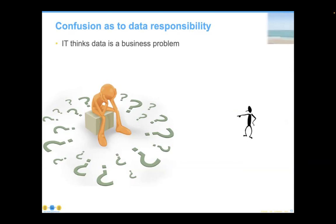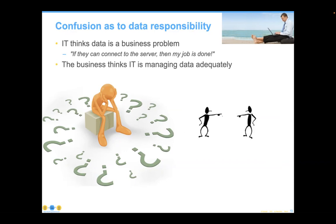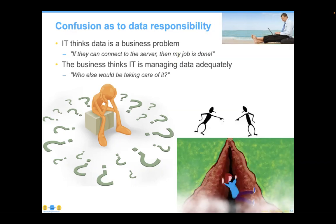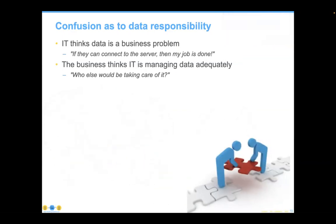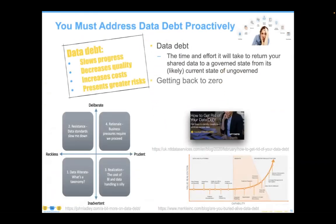IT has thought that data is a business problem — if they can connect to the server, my job is done. If the business thinks IT is managing it, after all, what else would the CIO be doing? And of course, many things is the answer, which means that data has fallen into an enormous chasm between the business and IT. Collectively, we all have to work together to repair the damage. Data debt isn't terribly easy to visualize — it slows things down, decreases quality, increases costs, and presents generally greater risks. And if we don't proactively address it, it will continue to mount.